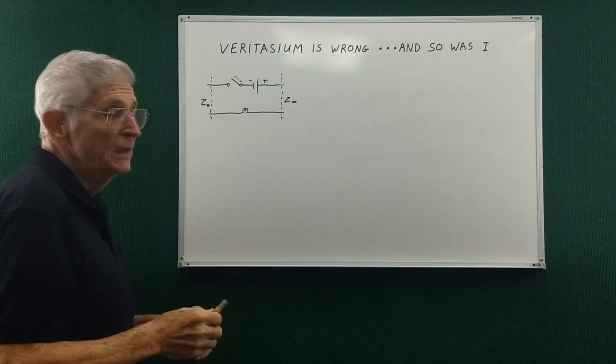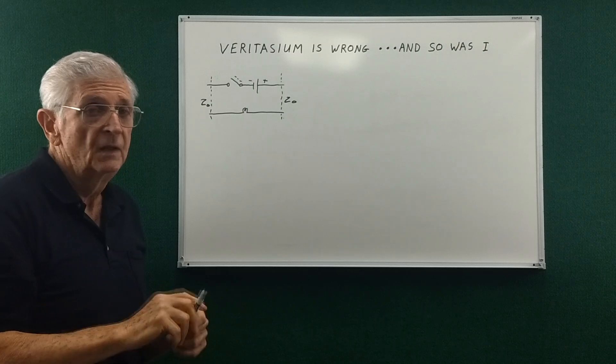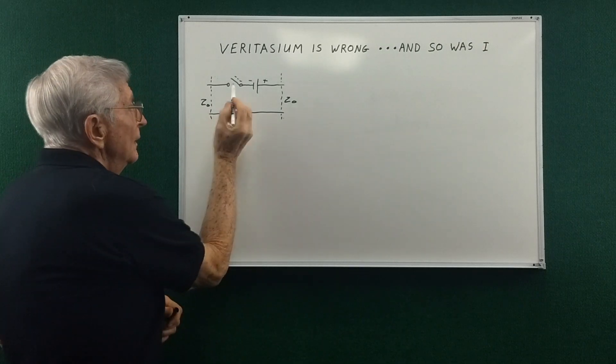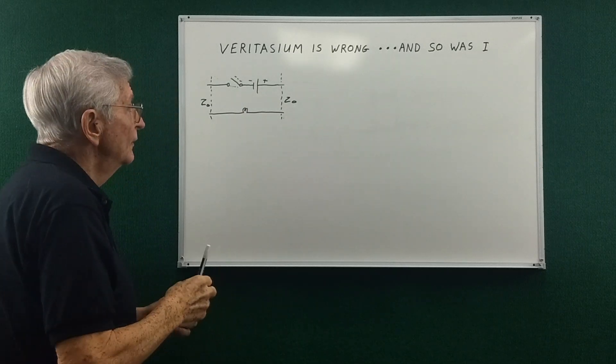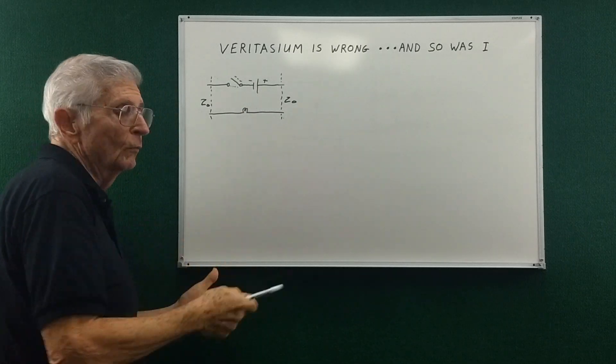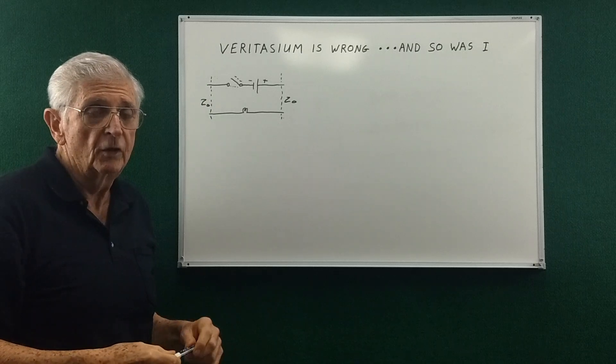And although I haven't seen it I understand there's another video that says there would be leakage current across the switch so that the bulb current would be at the bulb right from the very beginning.